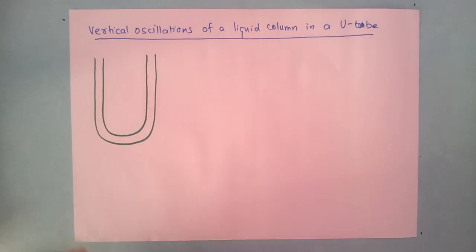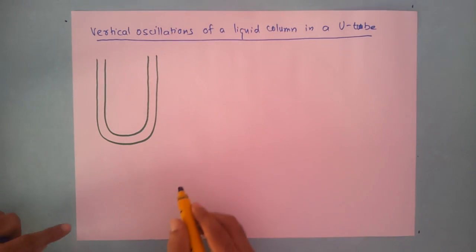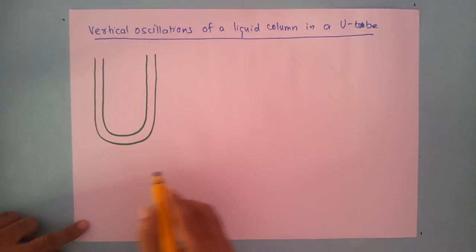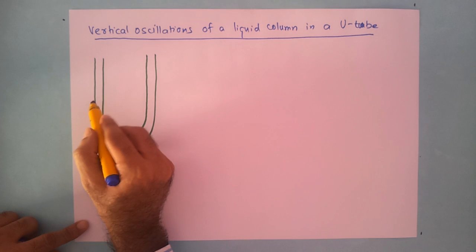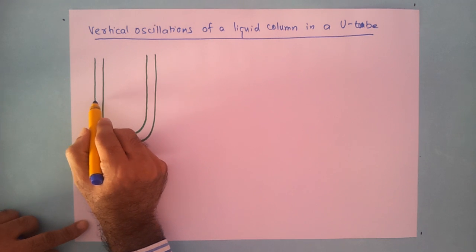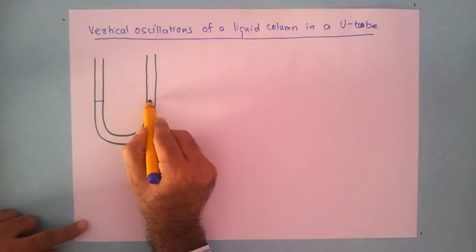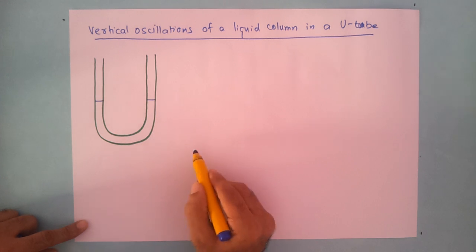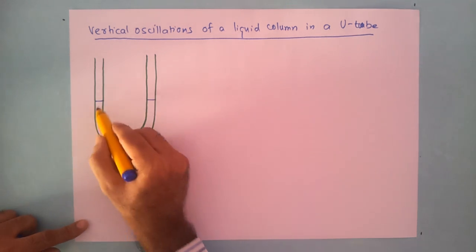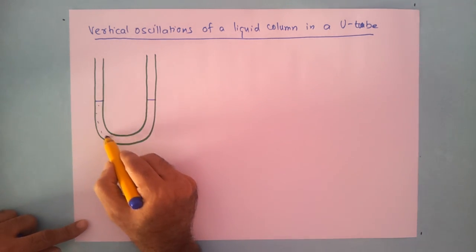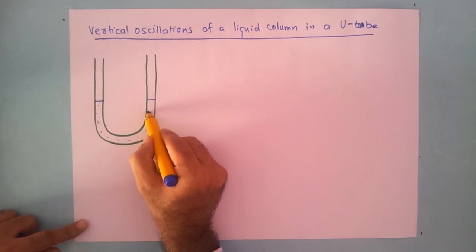We have a U-tube with some liquid in it and the level of the liquid in both the arms is equal. This is the level of the liquid in both arms.